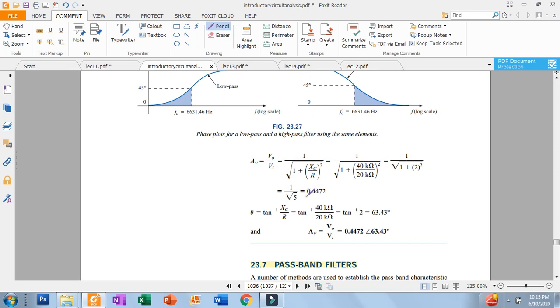This is your magnitude. Theta equals arctan XC over R. Theta is about 63.4 degrees. This is your magnitude and phase angle.